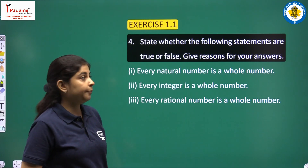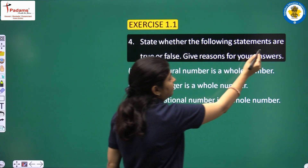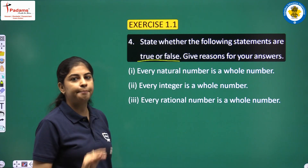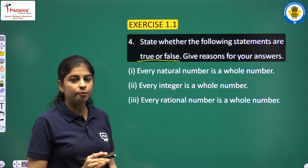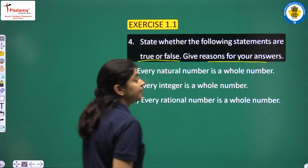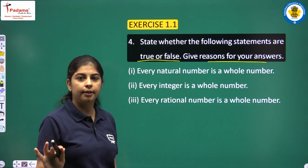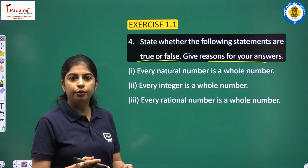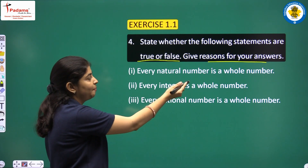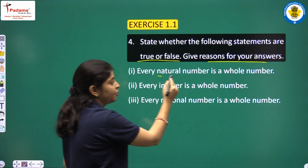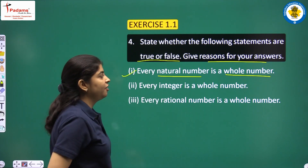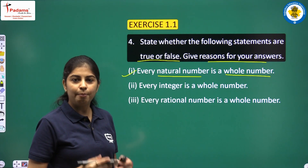Next example: State whether the following statements are true or false and give reason for your answer. First statement: every natural number is a whole number. We solved this — remember it is true, because every natural number is also a whole number.